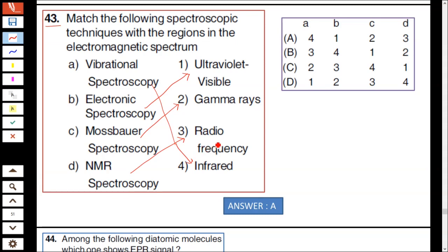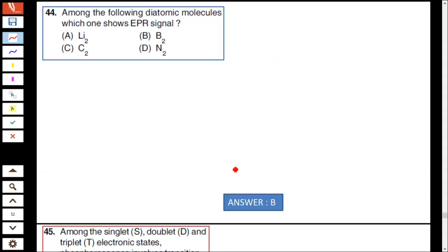Mass spectrometry is related to gamma radiation and NMR spectroscopy uses radio frequency region. Hence option A is correct.